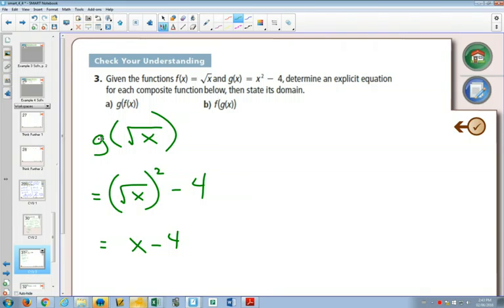So based on the final solution, the domain appears to be everything, right? But if we look back to the original equation, originally the domain had to be bigger than or equal to 0. So our domain here, x has to be bigger than or equal to 0.